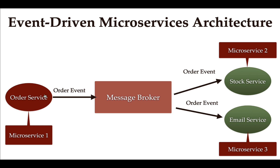Order service doesn't have to know about stock service or email service. It just needs to send a message or event to the message broker — that's it. It doesn't have to know about the consumers. Similarly, stock service and email service are the consumers.